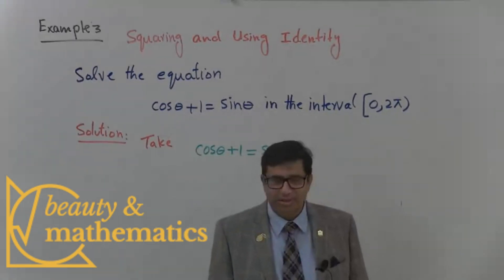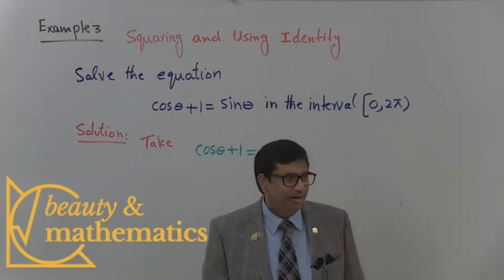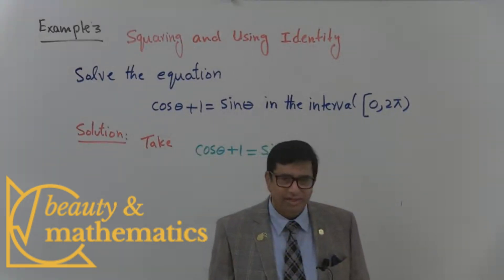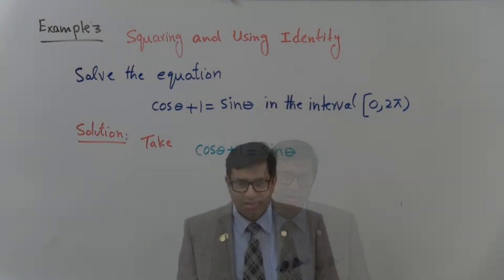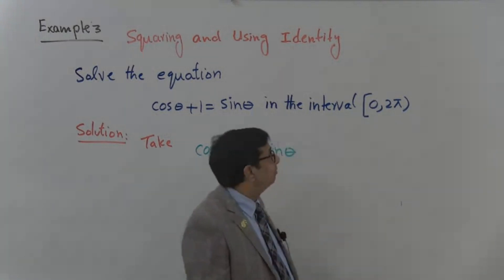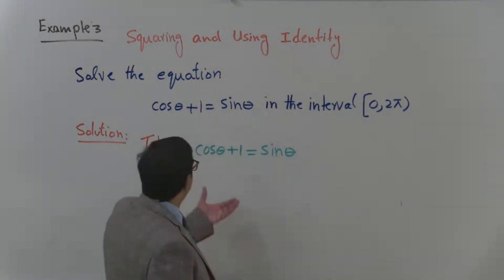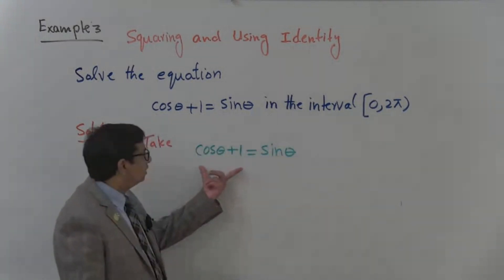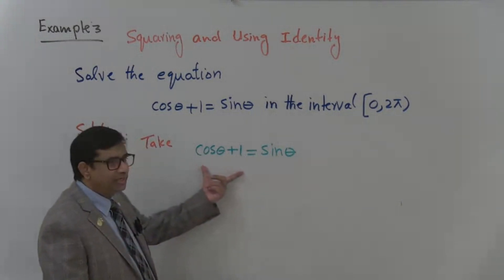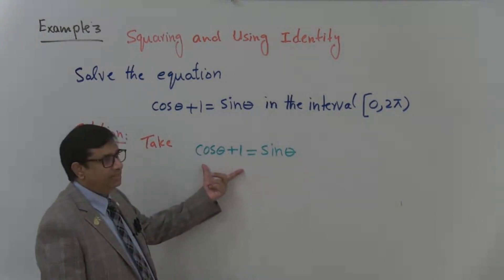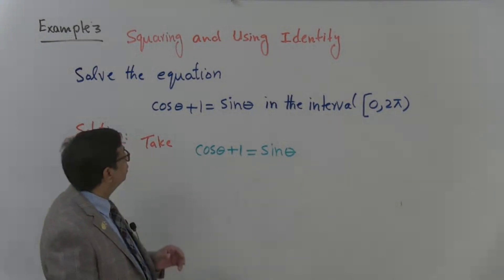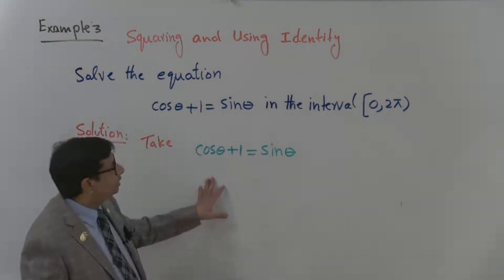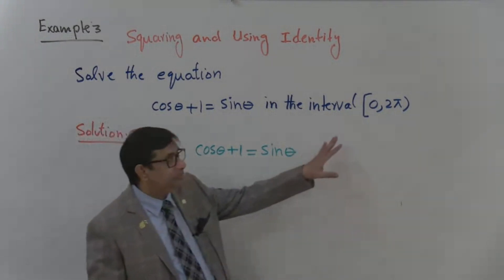I am Professor Jami. Welcome to this video. I would like to explain example number 3. In this question we have an identity: cosine theta plus 1 is equal to sine theta, to solve it in the interval 0 to 2 pi.